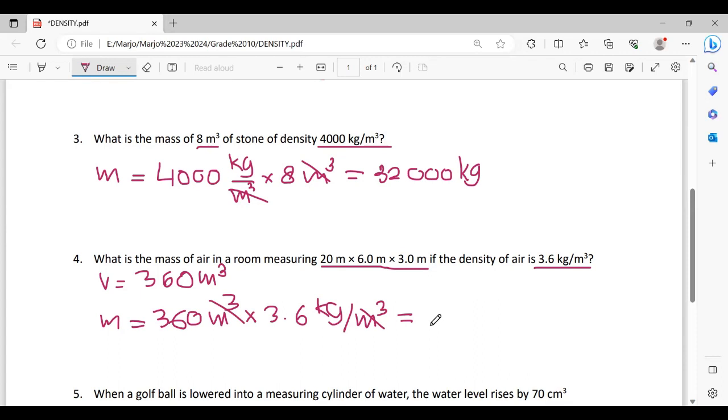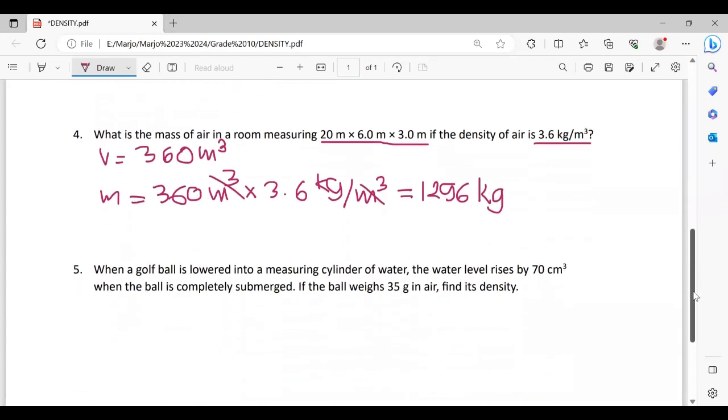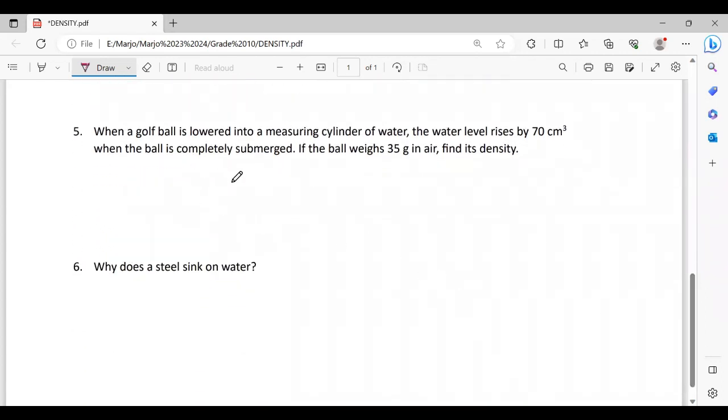Next, number five: When a golf ball is lowered into a measuring cylinder of water, the water level rises by 70 centimeters cube when the ball is completely submerged. If the ball weighs 35 grams in air, find its density. We're going to find density. This is the volume, while 35 is mass. So it means density equals 35 grams over...